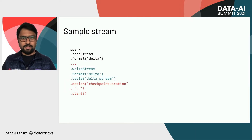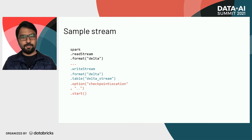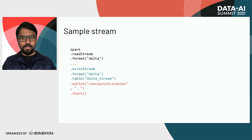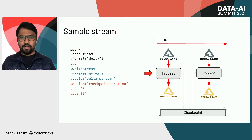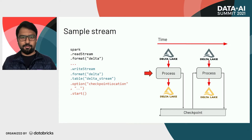Let's get started with a sample stream. If you take this example stream, I'm reading from a Delta table and writing to a Delta table with the checkpoint location specified. Whenever you submit this code into the Spark execution engine, Spark will read from your source table, process the data, and write it back to your output sink table, tracking the progress of your streaming job into the checkpoint location the user has specified.